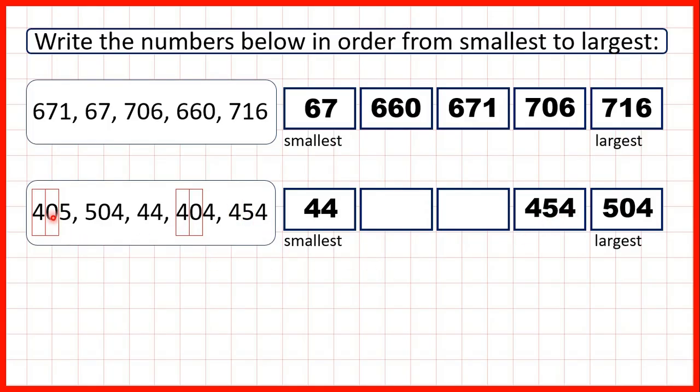And then if we look at our remaining two numbers, this number has five ones, but this number only has four. So 404 is next smallest, and then we have 405.